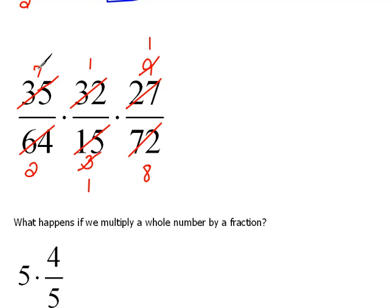Now, my remaining numerators are 7, 1, and 1. My remaining denominators are 2, 1, and 8. Nothing now will cancel with each other. So, now we're ready just to multiply straight across and straight across.